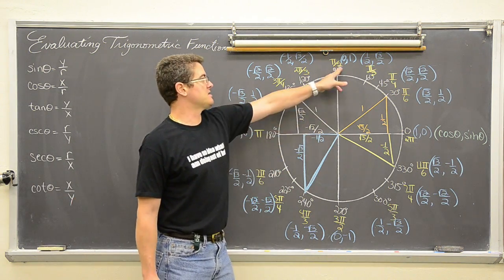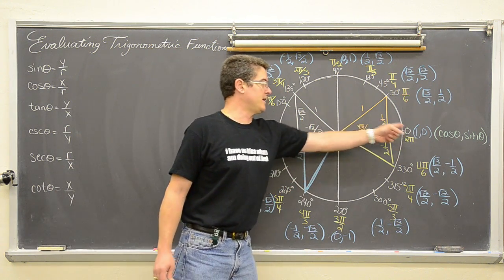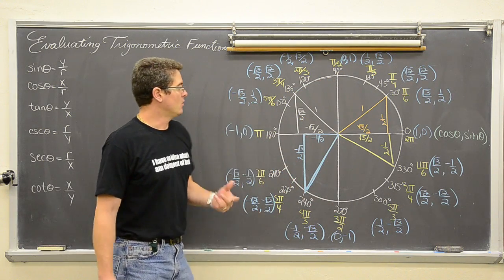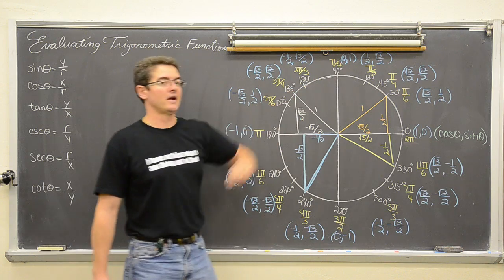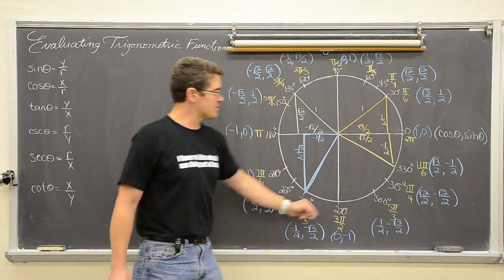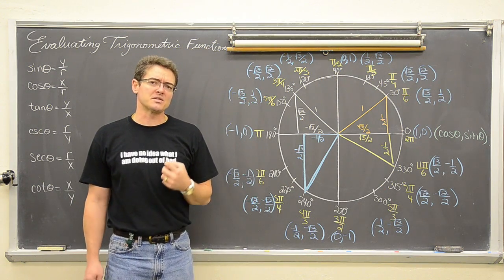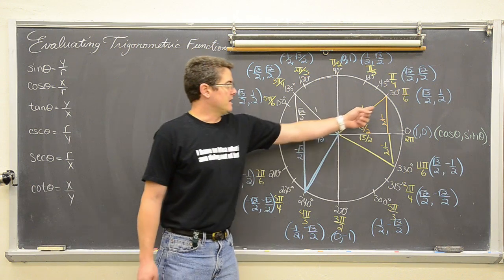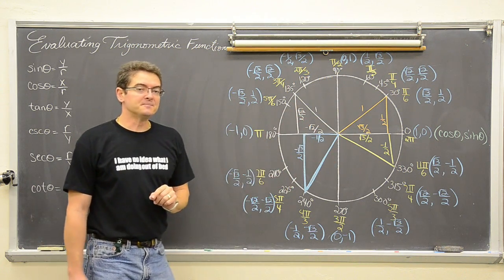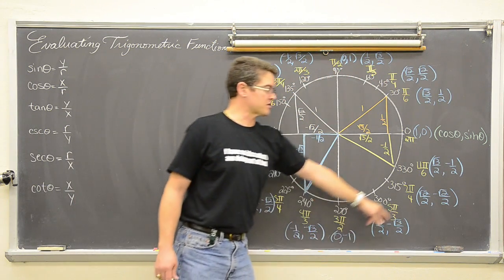Also remember that besides the quadrantal angles — which we identify easily as moving right or left one unit or up and down one unit from the origin — we do not need a triangle, nor can we set up a triangle for those four angles. The only angles we can set up triangles for are the twelve angles, three in each quadrant. There are only two triangles setting up this entire unit circle: the 30-60 triangle and the 45-45 triangle.